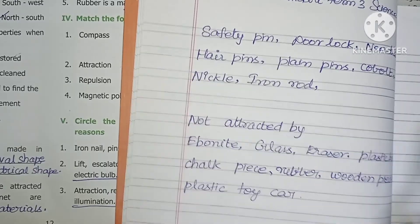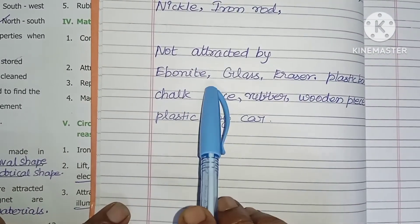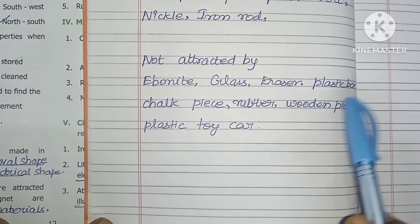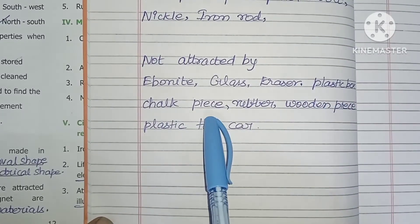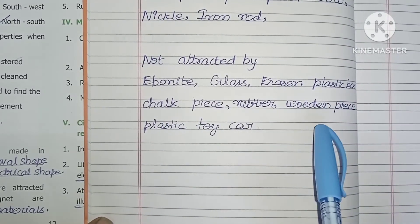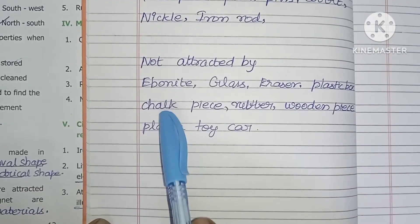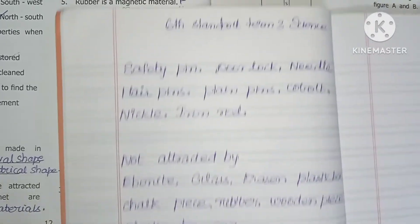Substances not attracted by magnet: ebonite, glass, eraser, plastic box, chalk piece, rubber, wooden piece, plastic, toy car. These are not attracted.